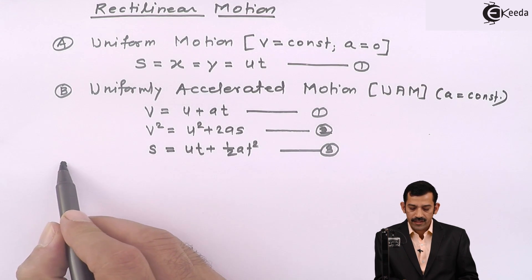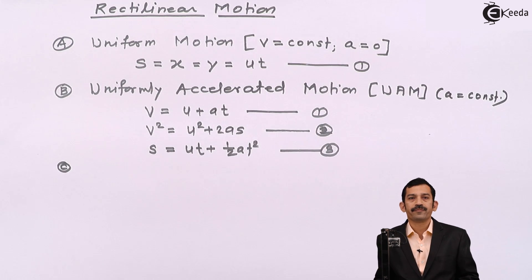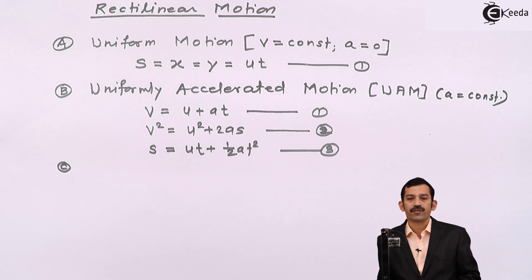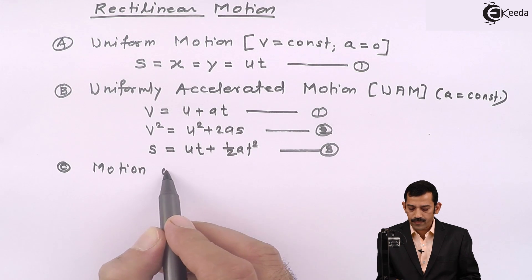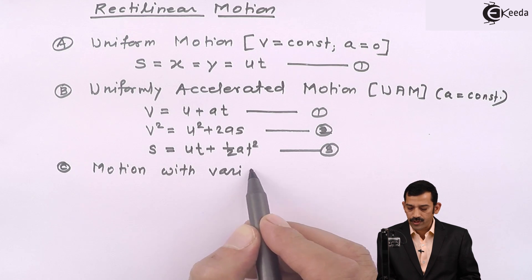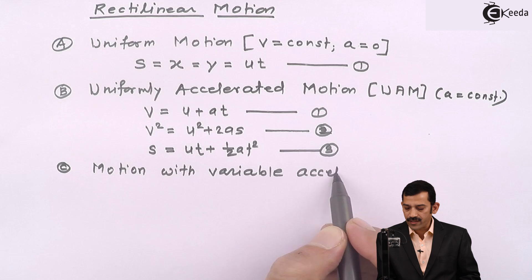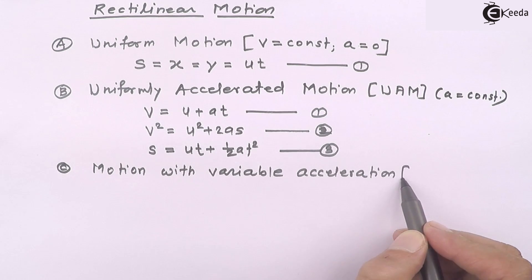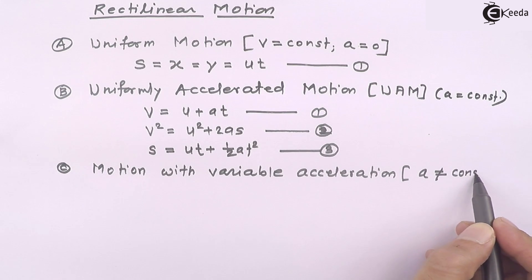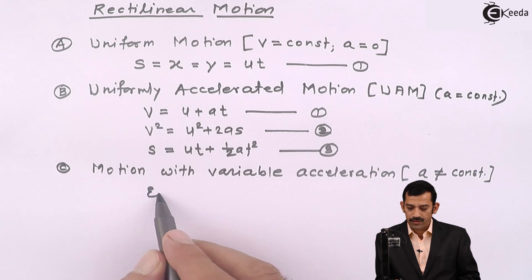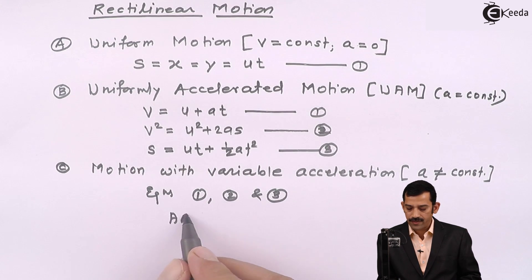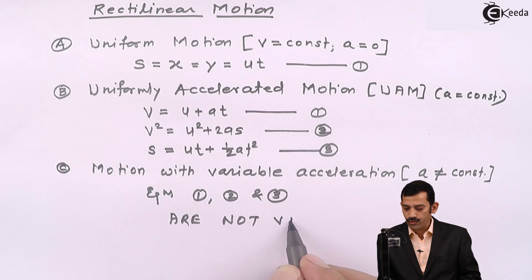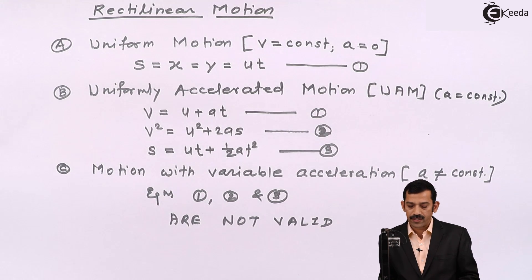The third type of motion is one in which acceleration does not remain constant — acceleration varies. Acceleration may vary with respect to time, with respect to position, or with respect to velocity. Then the motion is called motion with variable acceleration. As acceleration does not remain constant, the three equations of motion (equations one, two, and three) are not valid. How we solve such problems will be discussed in detail when we cover motion with variable acceleration.